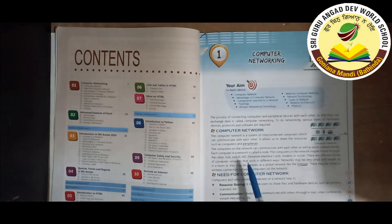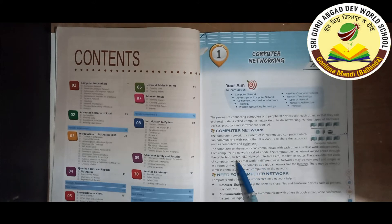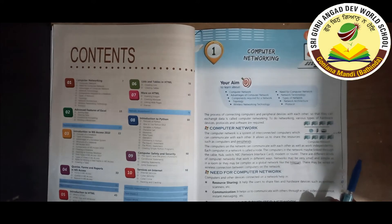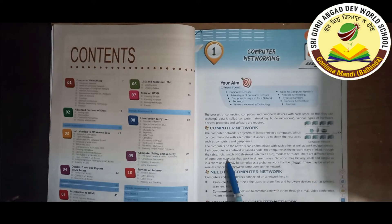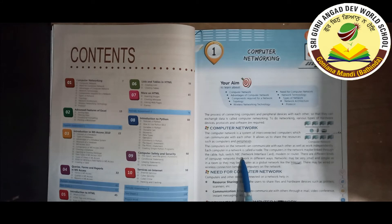Each computer in a network is called a node. The computers in the network may be linked through cables, hub, switch, NIC (Network Interface Card), modem, or router.